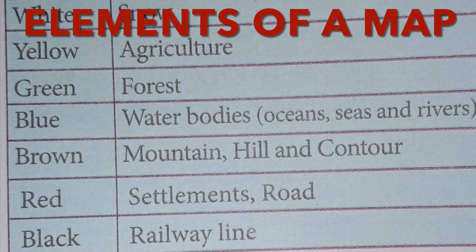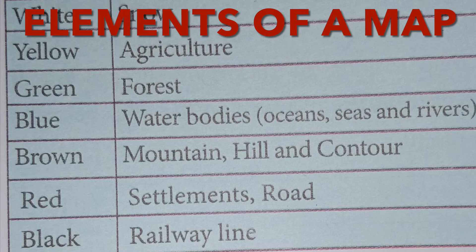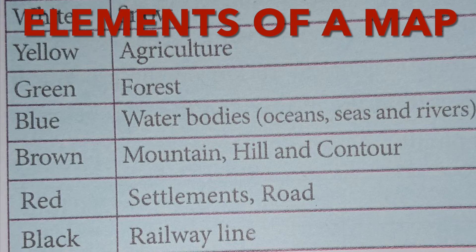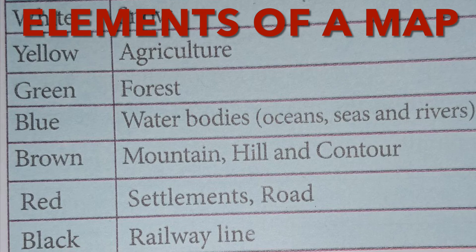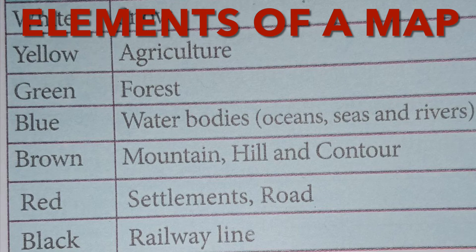Title: every map has a title that describes the information in the map. For example, a map with the title 'India Rivers' shows rivers of India. Direction: in general, maps are drawn with north orientation, which helps us to find other directions on the map like east, west and south.